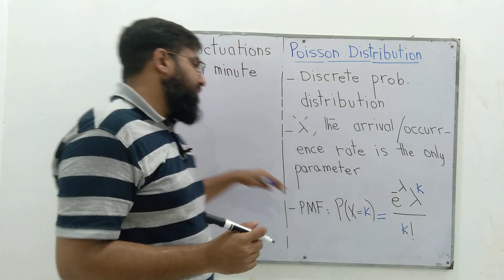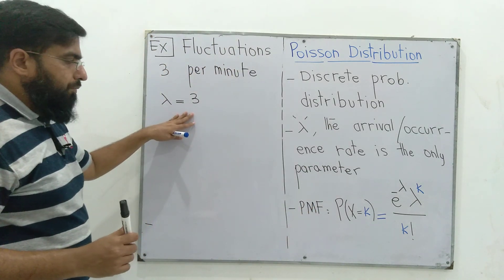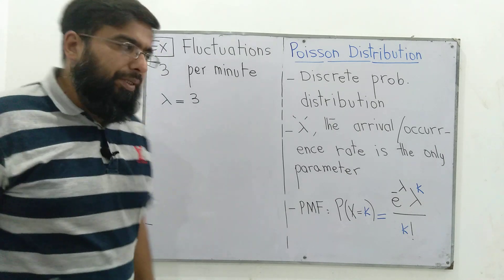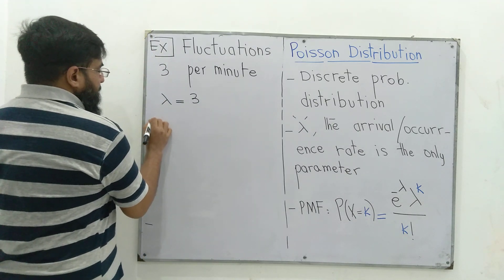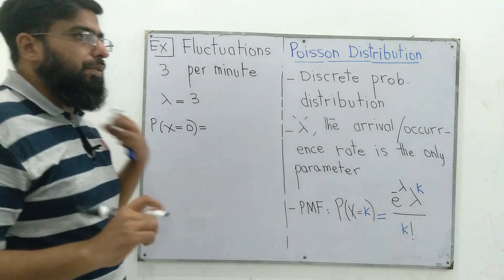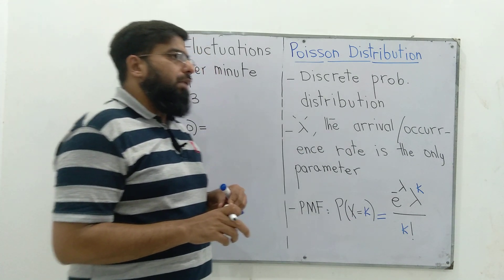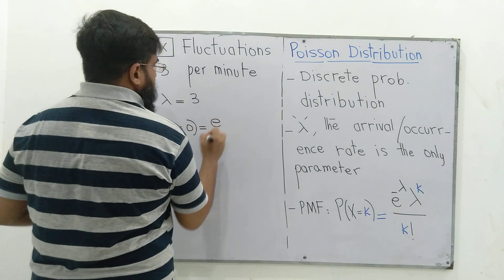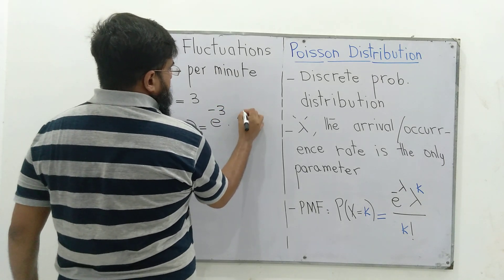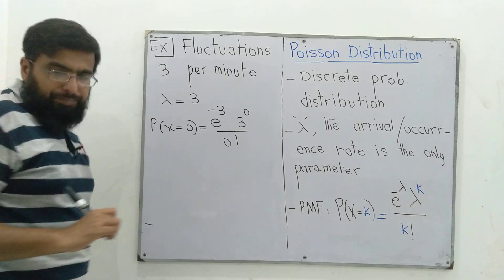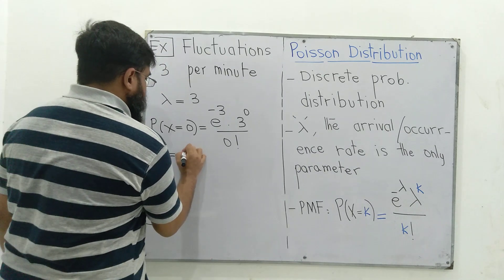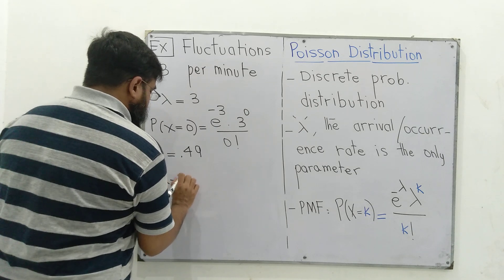Assuming it is distributed as Poisson, we can apply the PMF to find the probability of different numbers of fluctuations in the next one minute. The probability of no fluctuation is e to the minus lambda times lambda to the k over k factorial, which comes out to be 0.049.